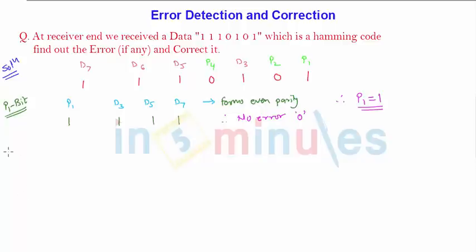Now let us find out for p2 bit. So for p2 bit the combination is p2, d3, d6 and d7. Again this should form even parity.